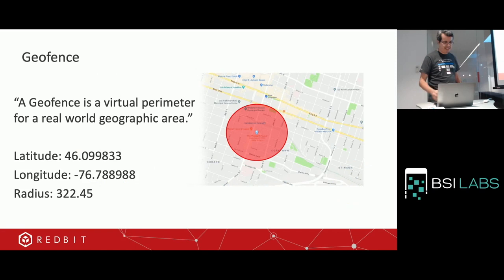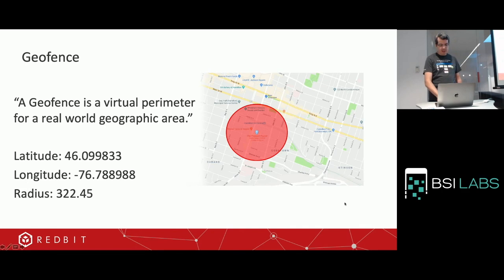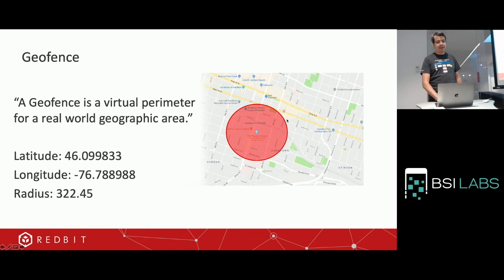So talking about geofences: a geofence is a virtual perimeter for a real-world geographic area. As you can see in the picture, there's a pin location with a latitude and a longitude — a geographic location — and a radius that defines the geofence.